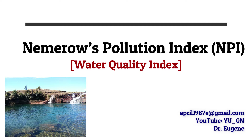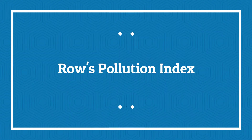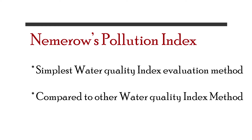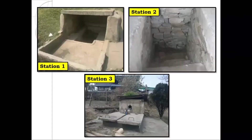This water quality index evaluation method is also known as the Rose Pollution Index. The steps for calculating the NPI index value are very simple when compared to other water quality index methods. For easy flow and better understanding of our discussion, hypothetically let us assume that a researcher is interested in analyzing and determining the water quality from three different groundwater sources.